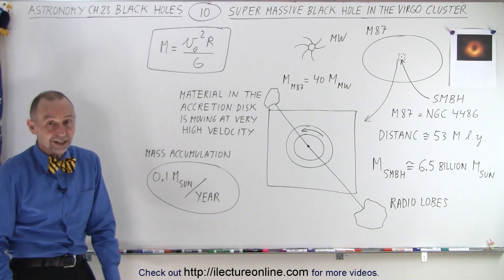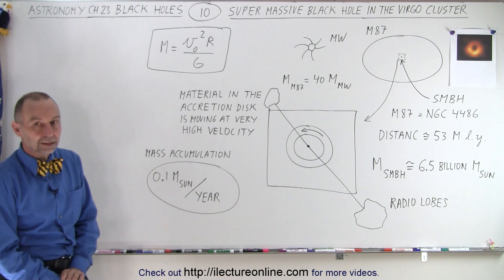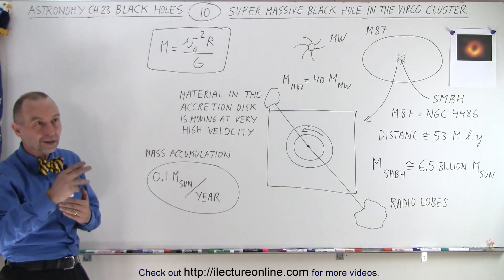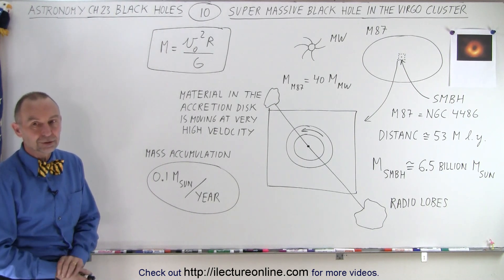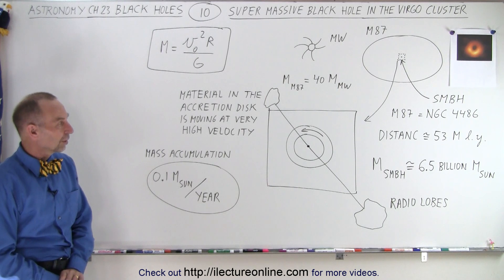Which is still much less than a light year by the way. Question: How far to which planet is it? Answer: Remember Pluto is about 40 astronomical units, so it would be about 25 times the distance from the Sun to Pluto. So it's a big huge enormous accretion disk.